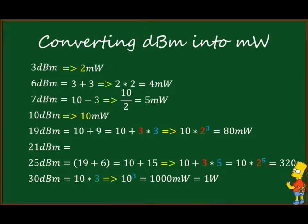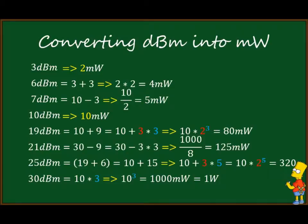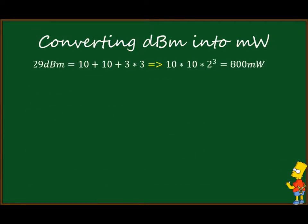30 dBm: 30 = 10 × 3, so it equals 10^3 = 1000 milliwatts, or 1 watt. For 21 dBm: 21 = 30 − 9, which by our rules gives 1000 / 8 = 125 milliwatts.